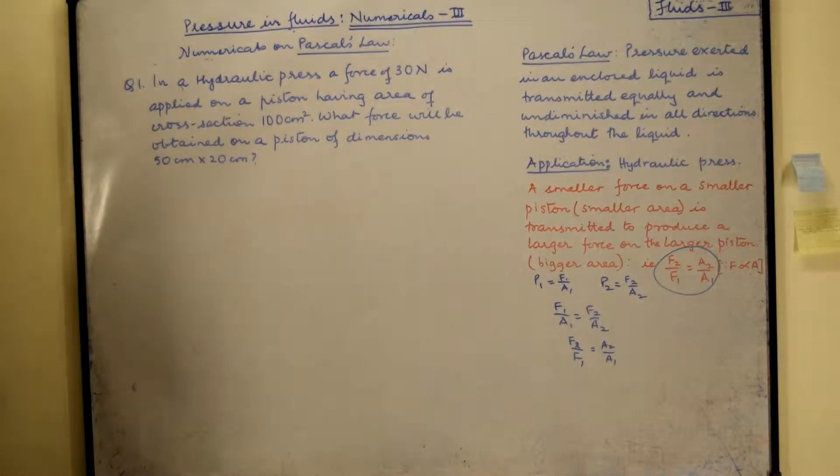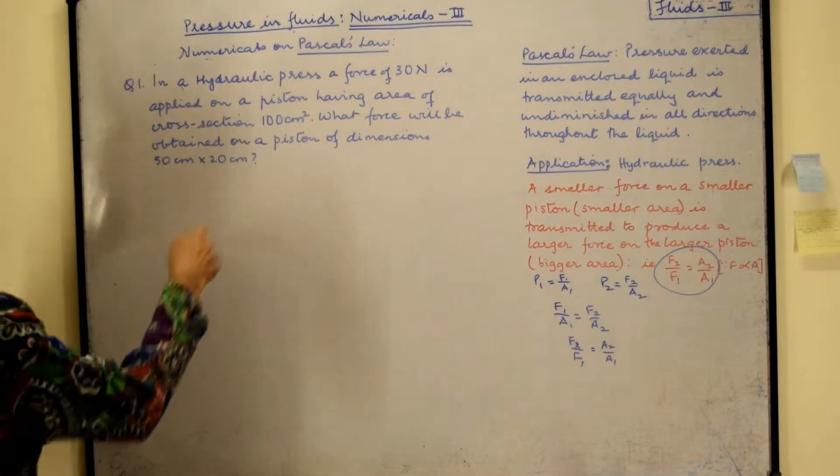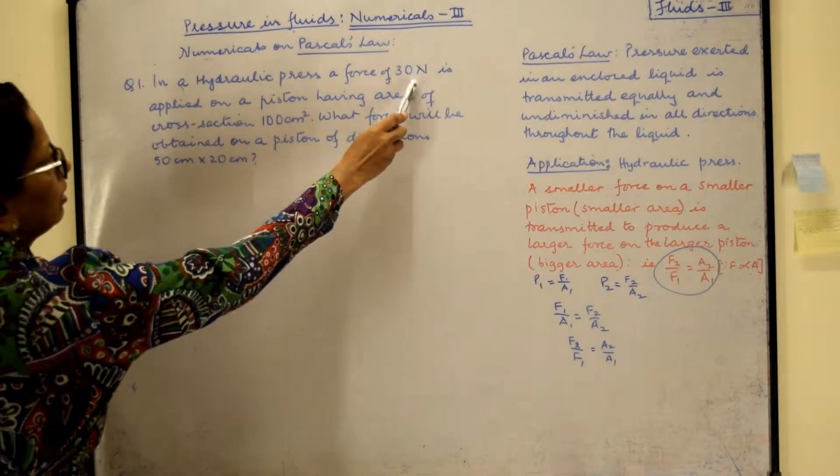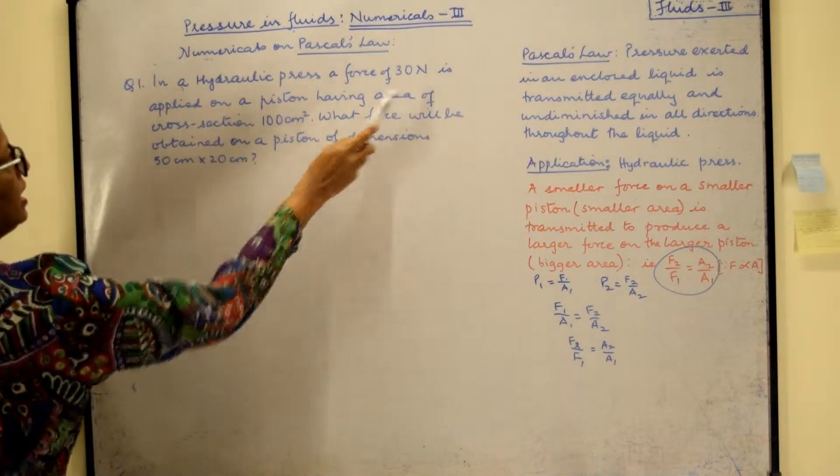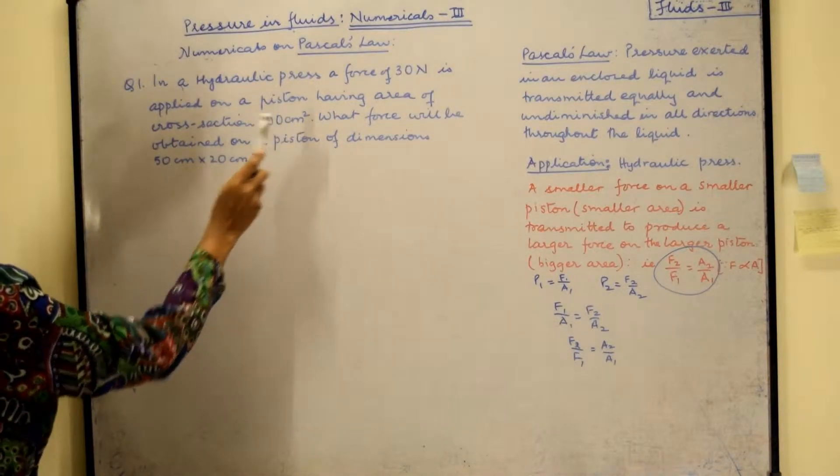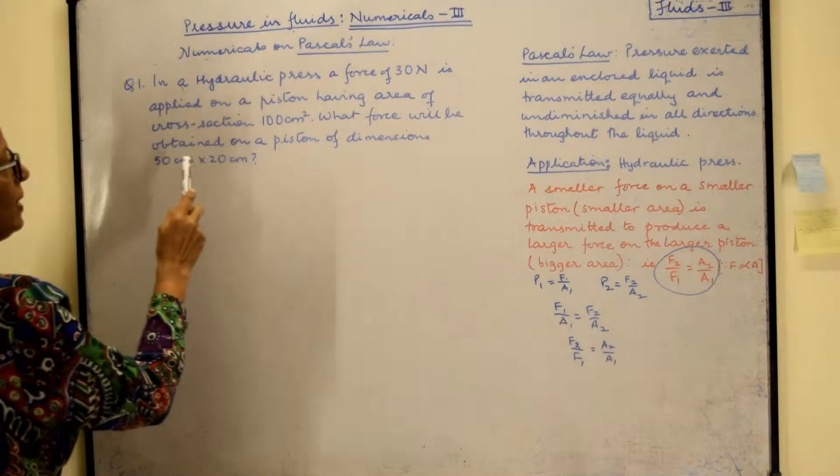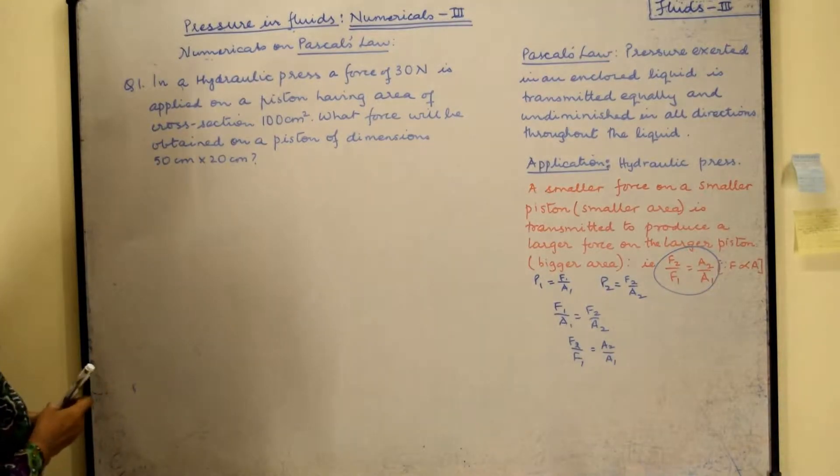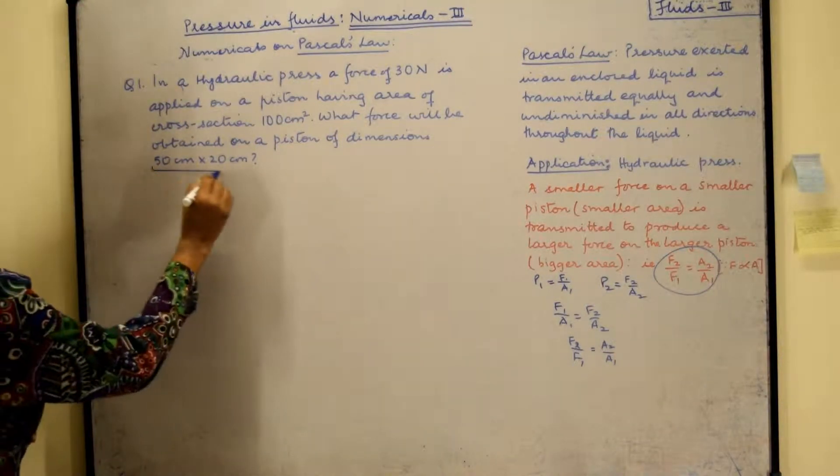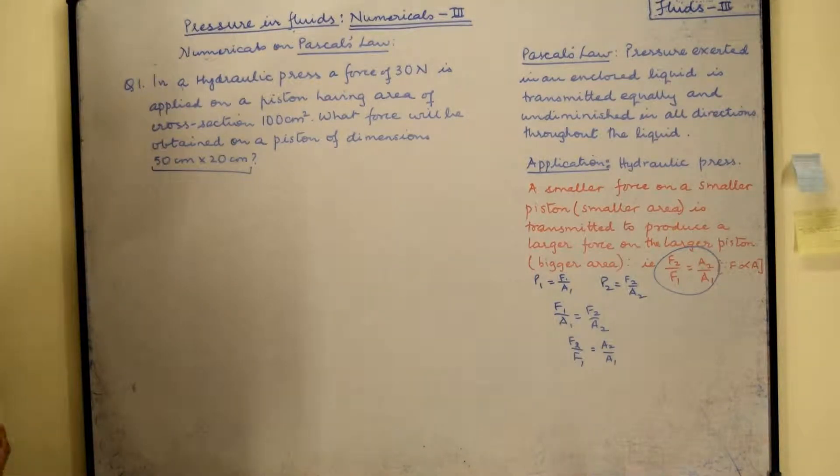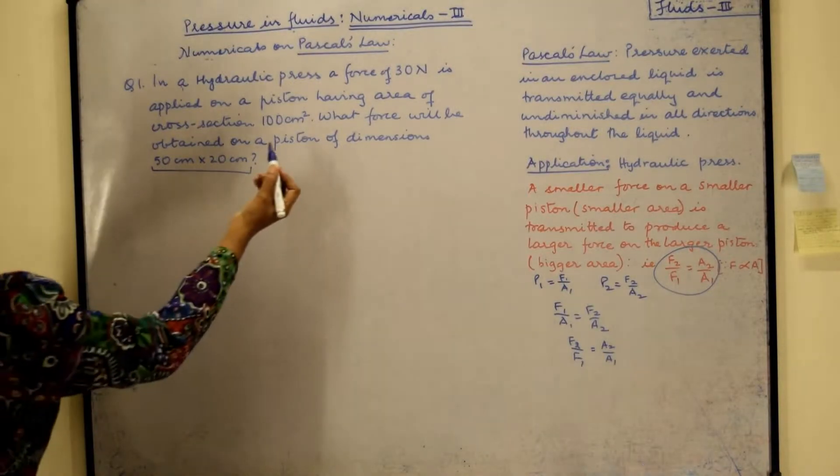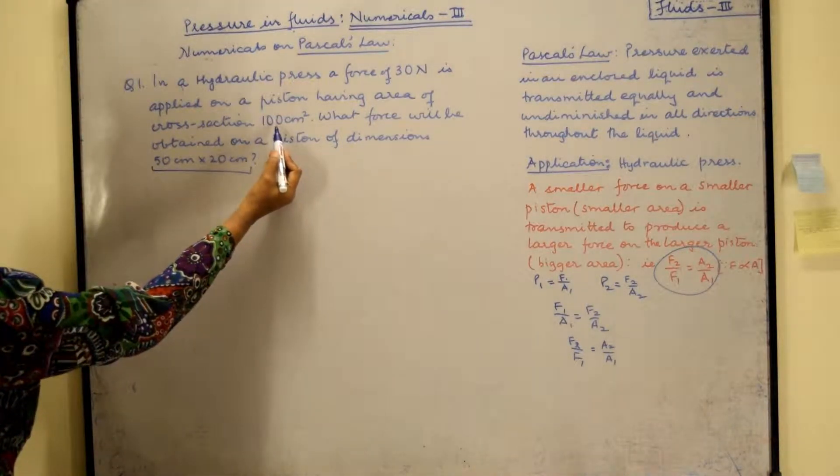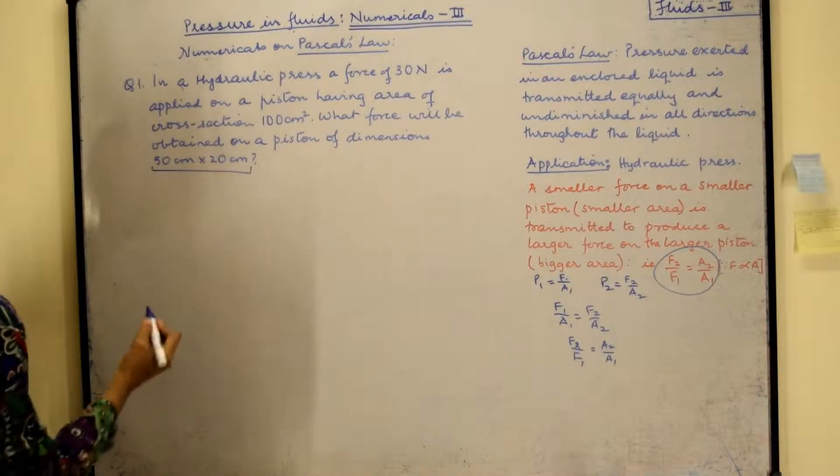So now let us come to the first question. So we have a hydraulic press and a force of 30 newtons is applied on the piston having area of cross section 100 centimeter square. What force will be obtained on the piston of dimension 50 centimeter by 20 centimeter. Now this you can mentally multiply and say it is 1000 centimeter square. So obviously we are going to have from smaller piston we are coming to the larger piston.